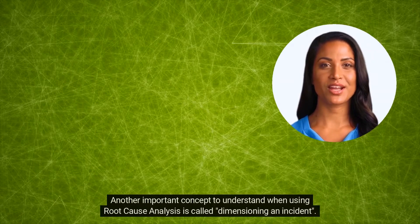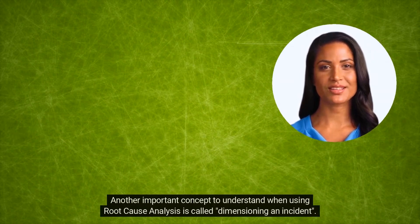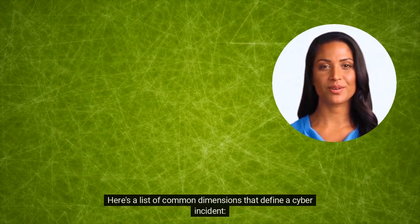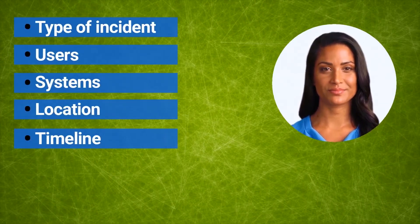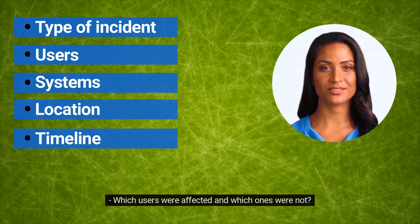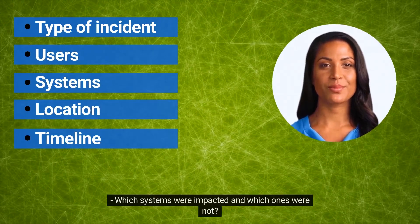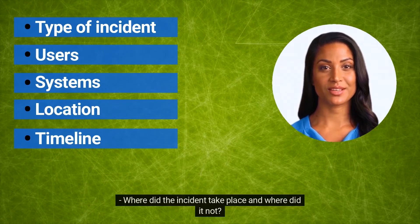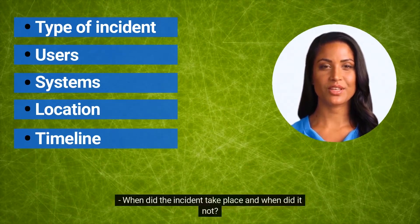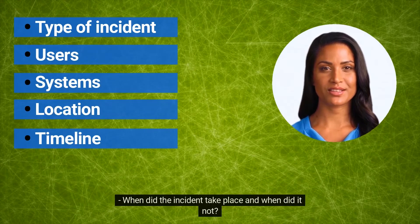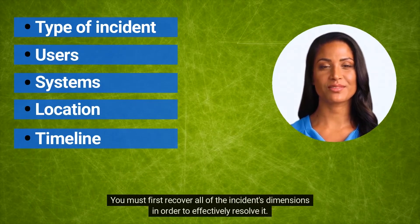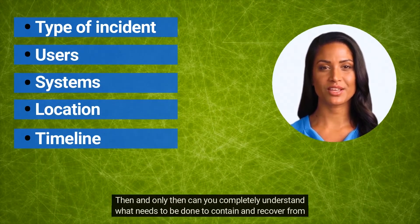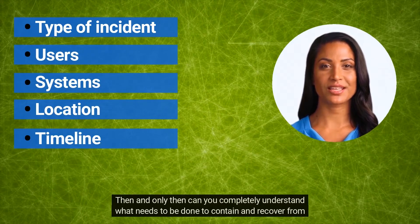Another important concept to understand when using root cause analysis is called dimensioning an incident. Here's a list of common dimensions that define a cyber incident: Which type of incident are we facing and which ones are we not? Which users were affected and which ones were not? Which systems were impacted and which ones were not? Where did the incident take place and where did it not? When did the incident take place and when did it not? You must first recover all of the incident's dimensions in order to effectively resolve it.